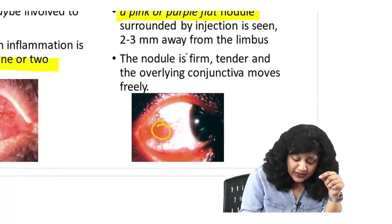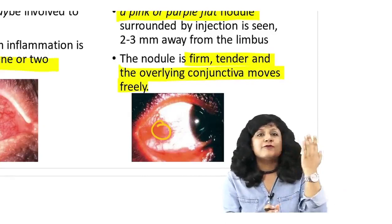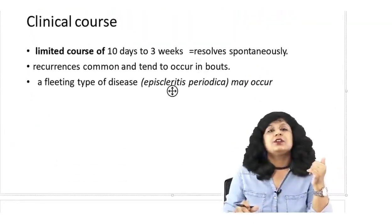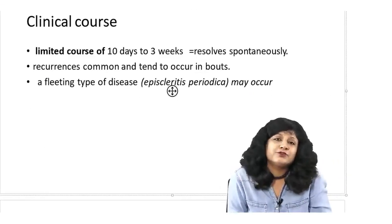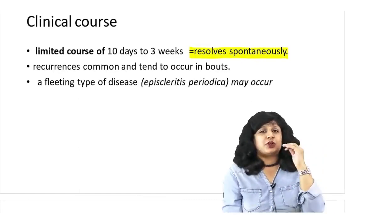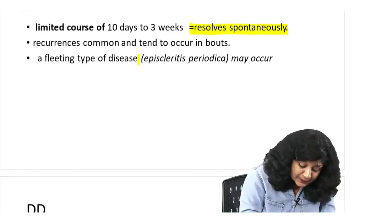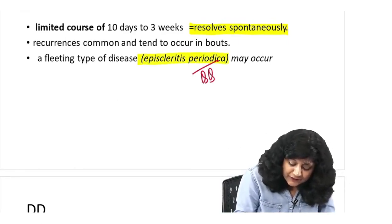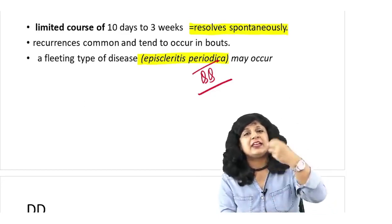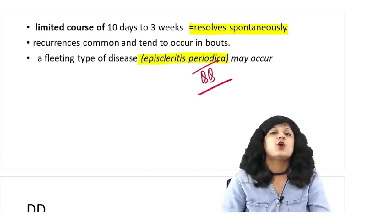The nodule in nodular episcleritis is a firm, tender nodule and the overlying conjunctiva moves freely. These are the things you check when examining a case of episcleritis. The clinical course is limited — the best part is that it resolves spontaneously and is benign, but it is recurrent. Recurrences are common and it can occur in bouts, which is called episcleritis periodica. Patients become restless as it keeps recurring, that is episcleritis periodica.